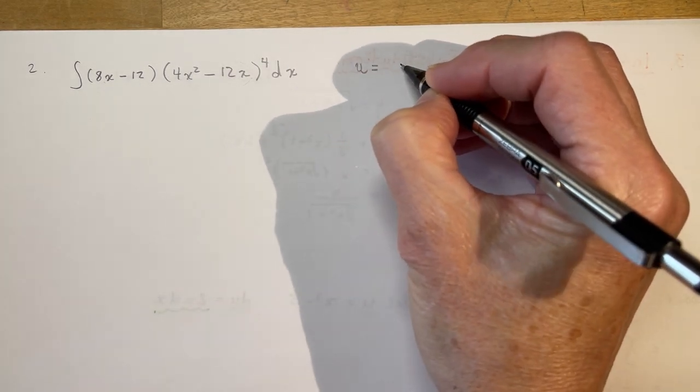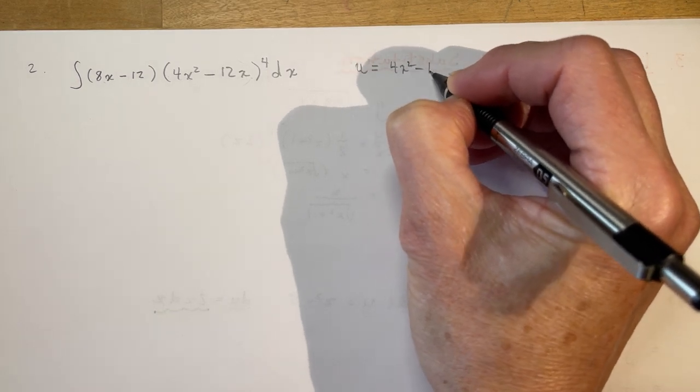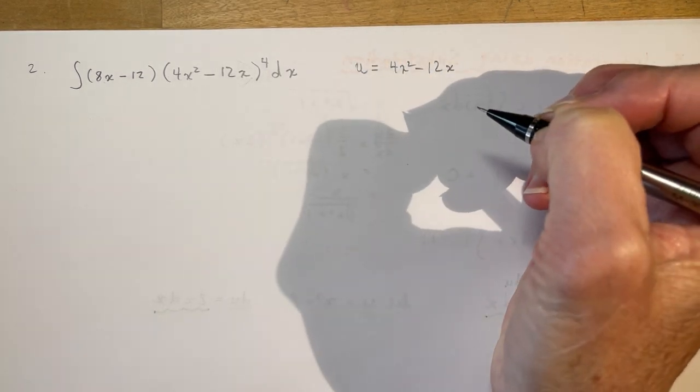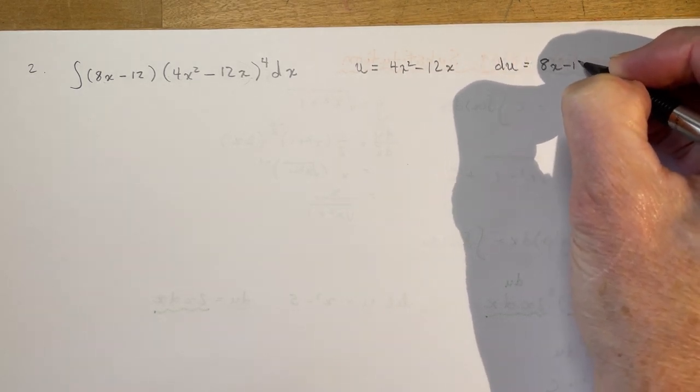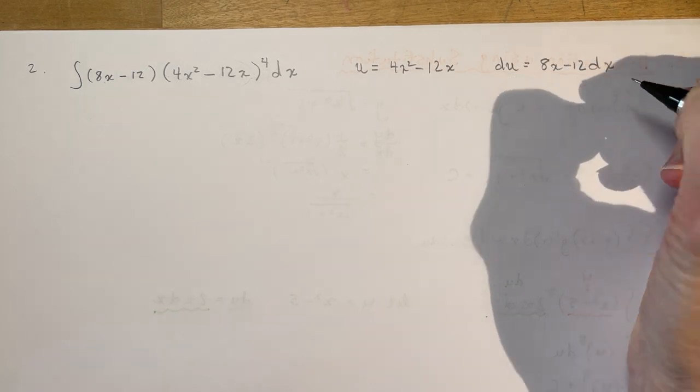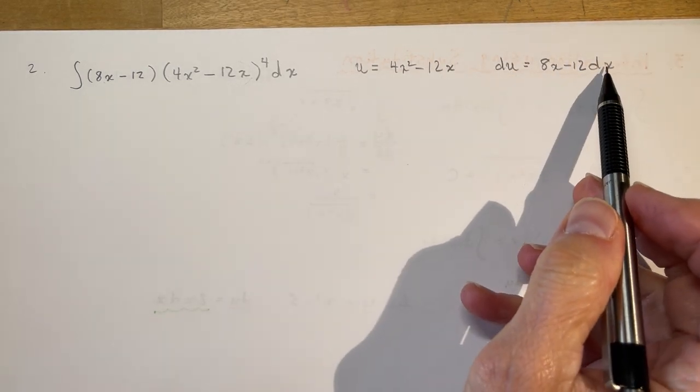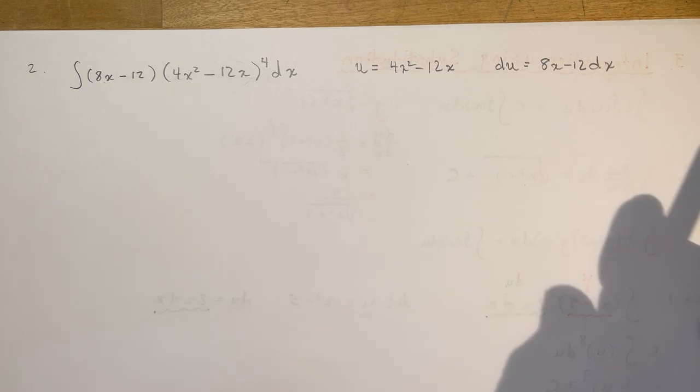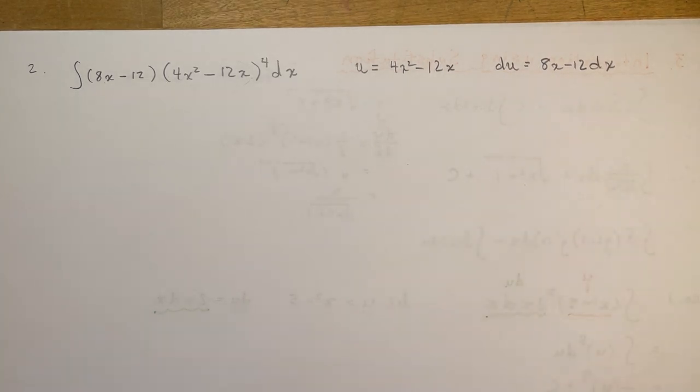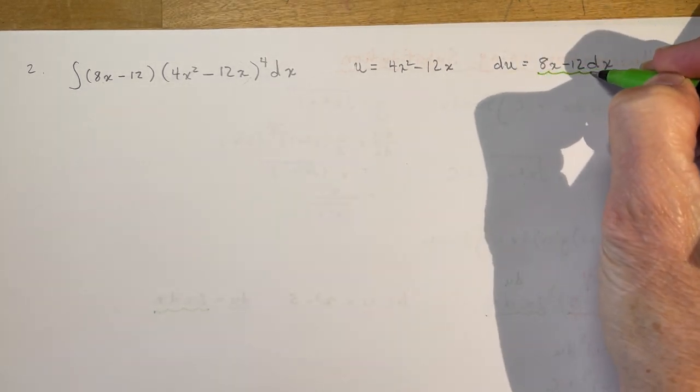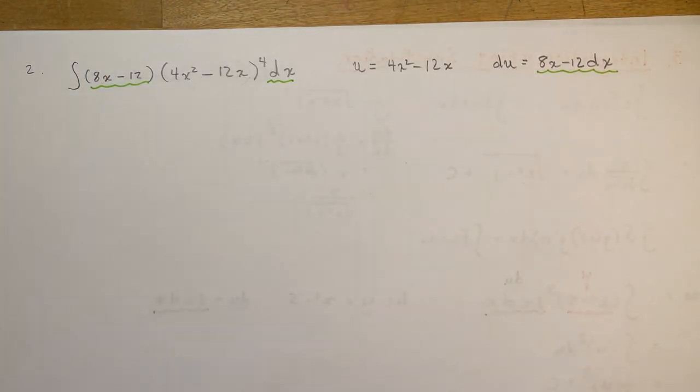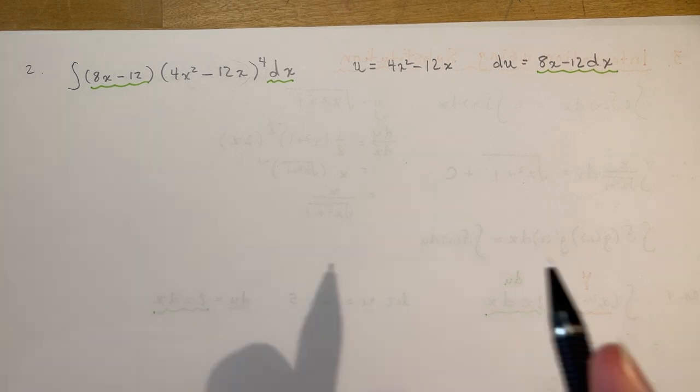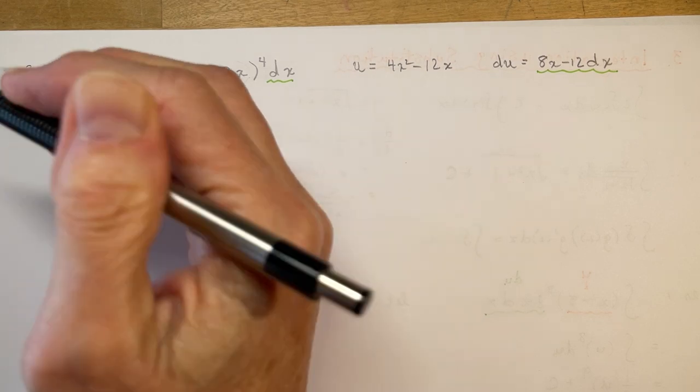So, I'm going to say, let u equal 4x squared minus 12x, and du is going to be 8x minus 12 dx. Now, note again that I've made sure to include the dx here, because this whole thing, look, it's right there. 8x minus 12 dx. That covers this one and this one, and my u is just this 4x squared minus 12x.